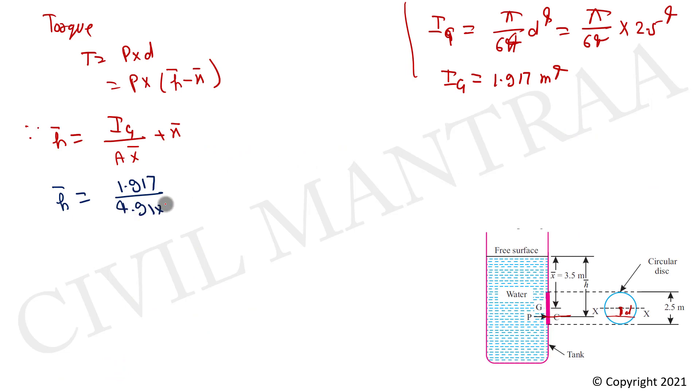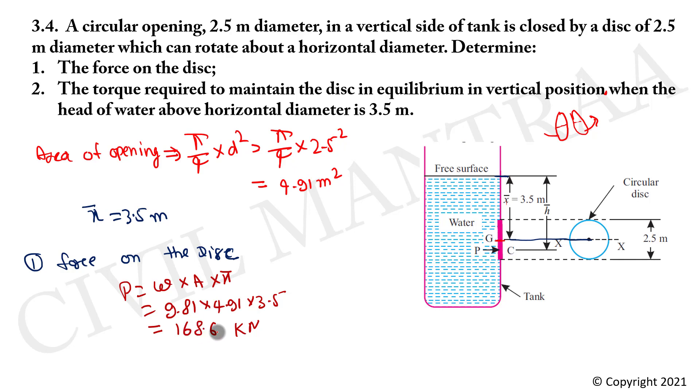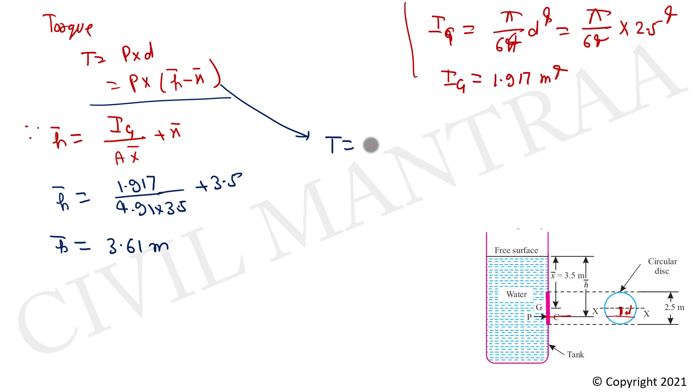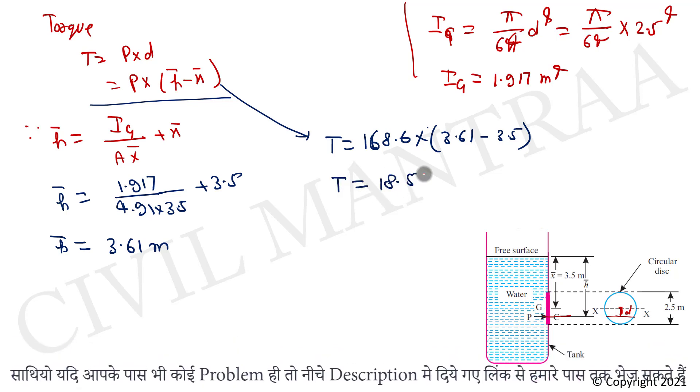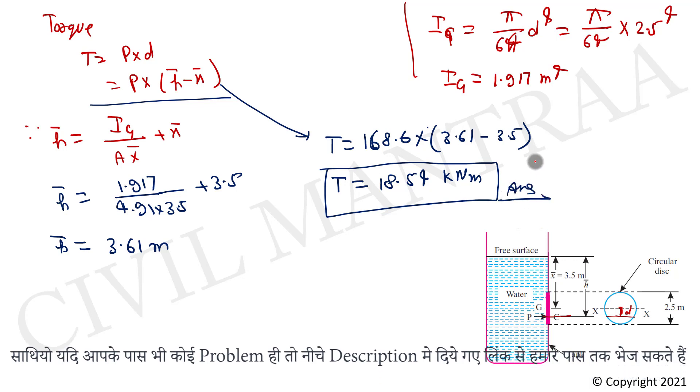The torque T equals force times distance. T equals 168.6 multiply by h-bar 3.61 minus x-bar 3.5. Now the torque is 18.54 kilonewton meter. This is the answer.